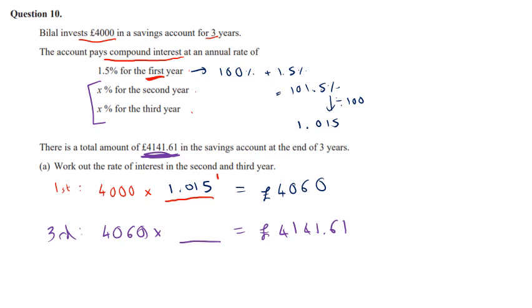So we've got 4,060 times something, which I'm going to call X, and that gives me that. But it's not just X, is it? It's X squared. And the reason it's X squared is because we are thinking about how much money there is over two years. So the second year and the third year means two years in total.